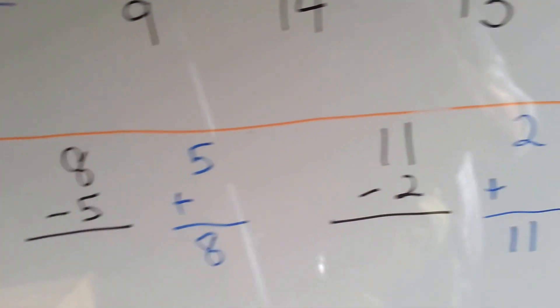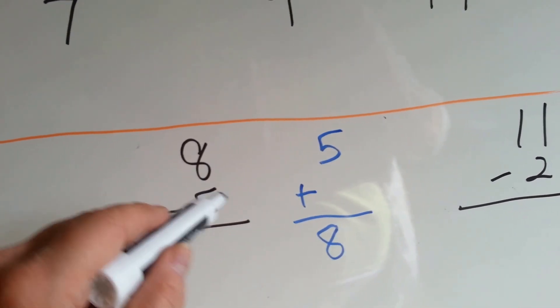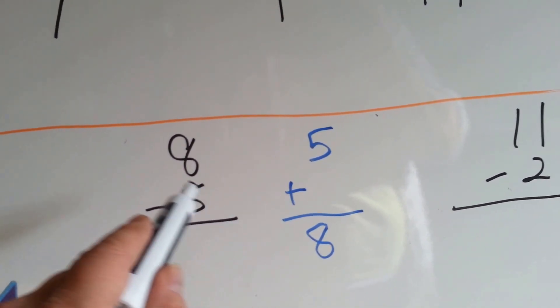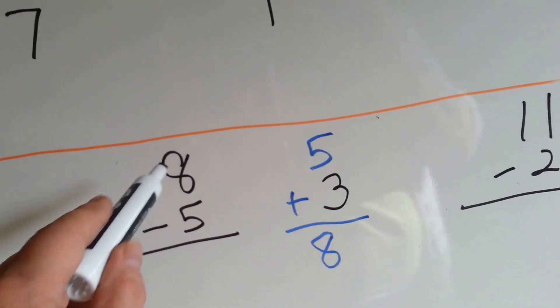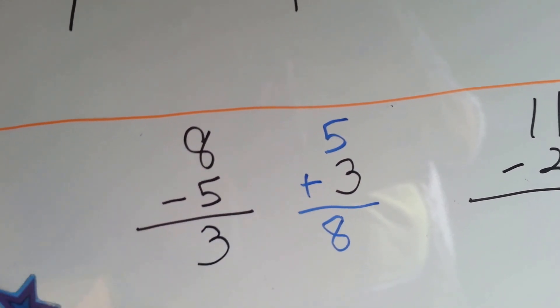Now, let's take a look at these. 8 minus 5. Well, 5 plus what is equal to 8? 5 plus 3 equals 8. So, 8 minus 5 is 3. Again, that's a fact family.